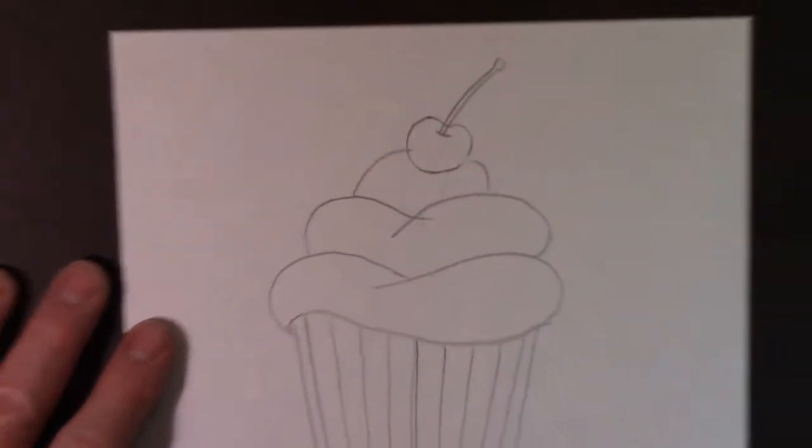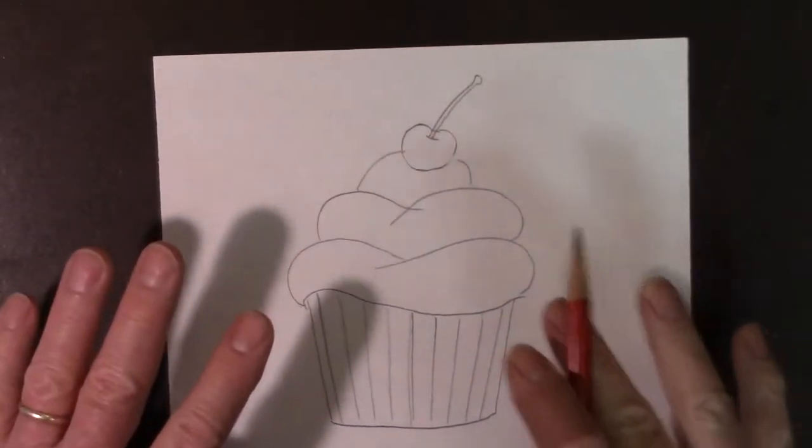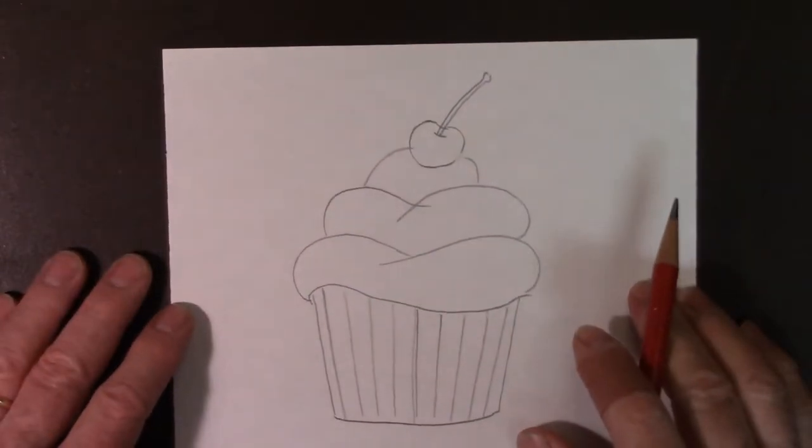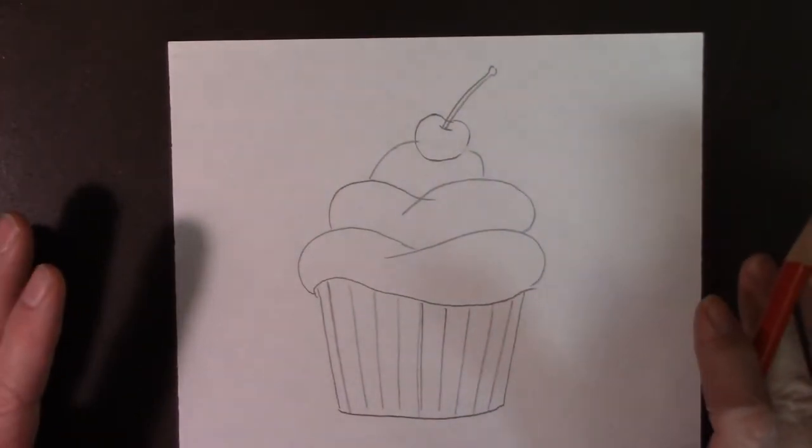Now, I'm going to be using oil pastels to color this in. So if I do sprinkles, I'm going to wait until I'm done coloring the icing and then put the sprinkles in it, unless your sprinkles are going to be really big.